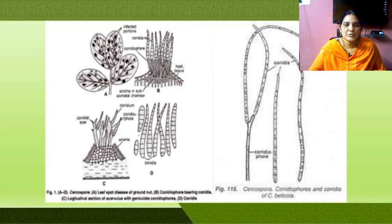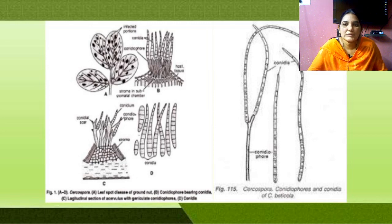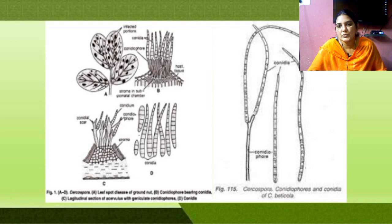To recap: Cercospora personata and Cercospora arachidicola — both fungi attack groundnut plants and cause Tikka disease. The mycelium enters into the groundnut plants, produces mycelium, and forms haustoria. The haustoria absorb food material from the plant and help to develop the total mycelium.